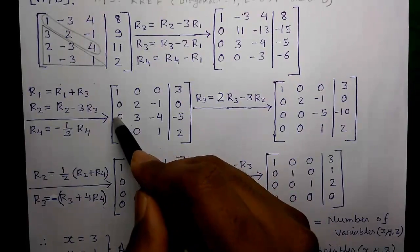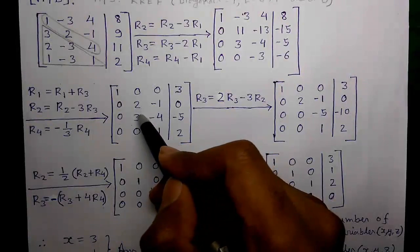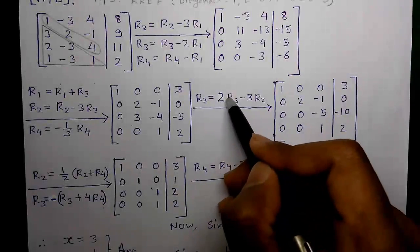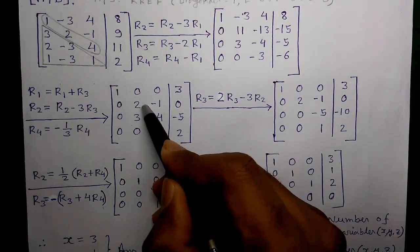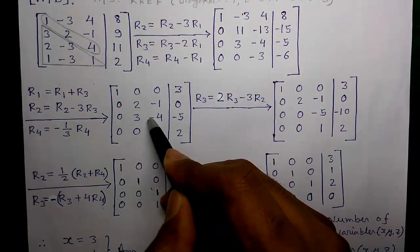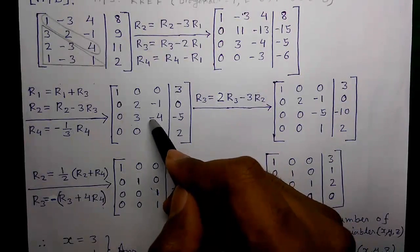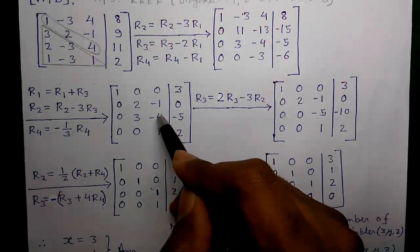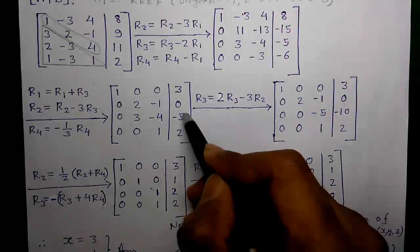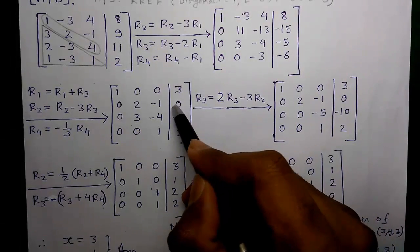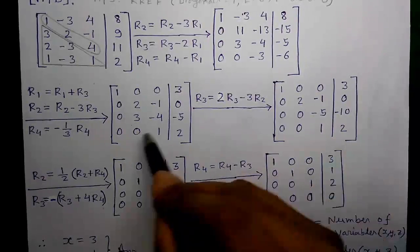Next we need a zero at this position. We apply R3 = 2·R3 − 3·R2: 3×2 − 2×3 = 0; 2×(−4) − 3×(−1) = −8 + 3 = −5; and 2×(−5) − 3×0 = −10. This is our new row 3, and row 4 remains the same.